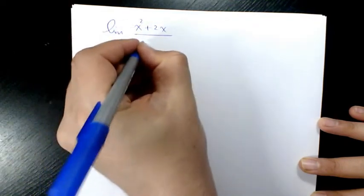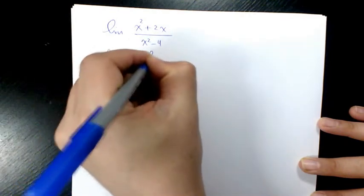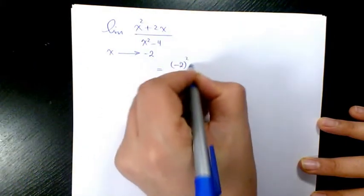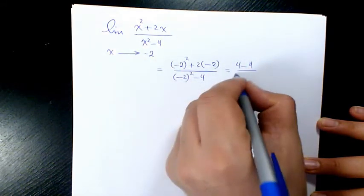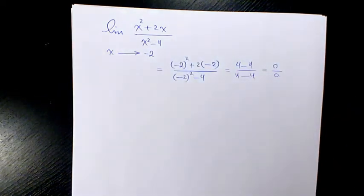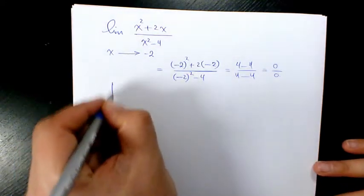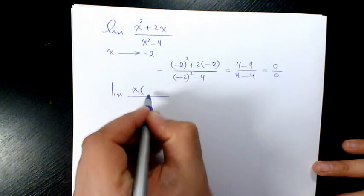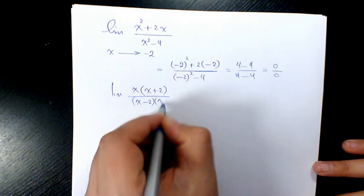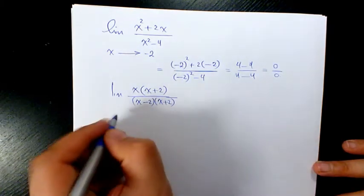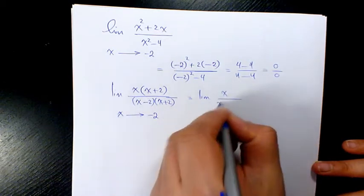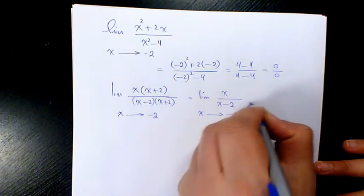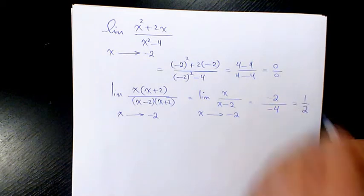Next example: the limit of (x squared plus 2x) over (x squared minus 4) when x is approaching negative 2. Substituting gives 0 over 0, so we factor. The numerator has a common factor of x, giving x(x plus 2), and the denominator is a difference of squares: (x minus 2)(x plus 2). Canceling (x plus 2) gives x over (x minus 2), which at negative 2 is negative 2 over negative 4, equal to 1 over 2.